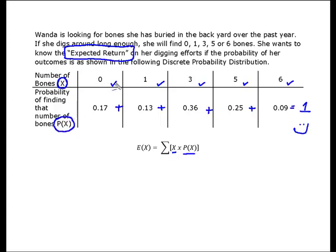So really all we're going to do is we're going to take the outcome of number of bones times the probability of finding that number of bones, multiply them together, and continue to add them all up.